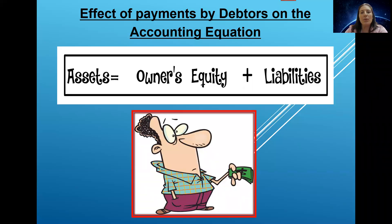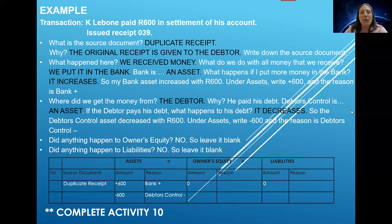In this section, we're going to look at the effect that a payment by a debtor has on the accounting equation. So here we're back with Caleb Borne, and the transaction is: Caleb Borne paid 600 Rand in settlement of his account, issued receipt 039.